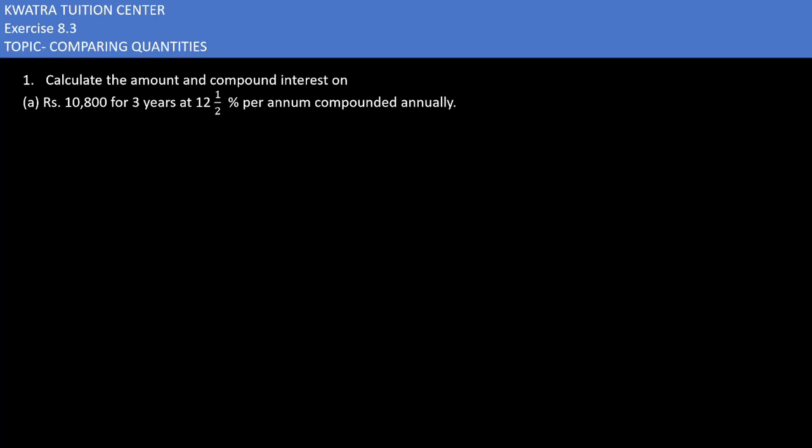Let's start with exercise 8.3. It says that we have to calculate the amount and compound interest on 10,800 for 3 years at 12 by 1 by 2% per annum compounded annually.